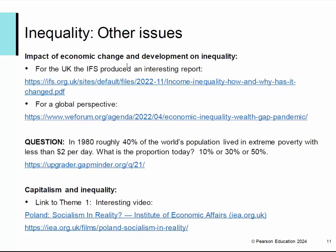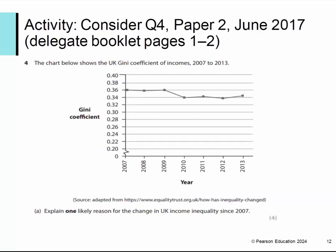Another line in the spec is capitalism and inequality. What you should be doing all the way through is trying to link up with what you've done before — try to see the links between different parts of the spec. I've put a link here to an IEA video about Poland and how it transformed itself from a command economy to a more free market economy, which obviously led to increased inequality. What the IEA is interested in stating is how it's increased prosperity — a good thing to look at with your students perhaps at the start of the course, but come back to it now as revision.